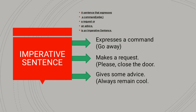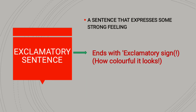Another type of sentences are imperative sentences. Imperative sentences are those in which we either give an order, make a request, or suggest or advise something. For example, to give an order: 'Go away.' To make a request: 'Please close the door.' To suggest or advise something: 'Please always cool down.' So these are all imperative sentences.